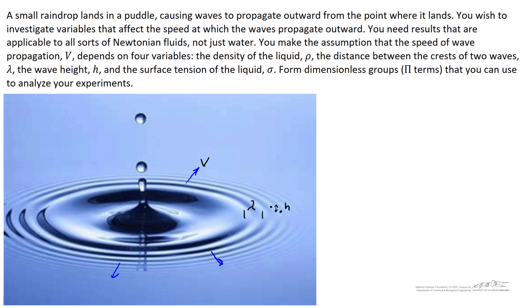So for the sake of this problem, let's just accept that the velocity is going to be impacted by the density of the fluid, the wavelength, the distance between the top and the bottom of the waves, and the surface tension. So with these assumptions, the question is, how many pi terms can we form?